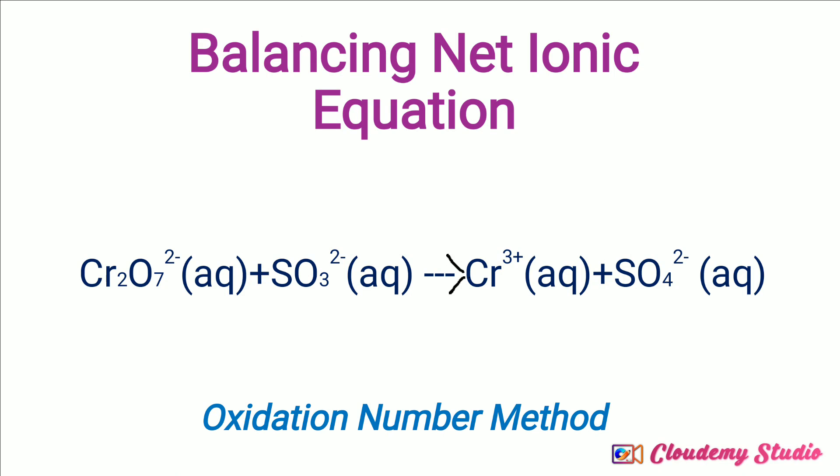Let's balance the net ionic equation for the redox reaction. The given equation is Cr2O7 2 minus plus SO3 2 minus gives Cr3 plus plus SO4 2 minus — that is dichromate ion plus sulfite ion gives chromium ion and sulfate ion. We need to balance this net ionic equation by the oxidation number method.